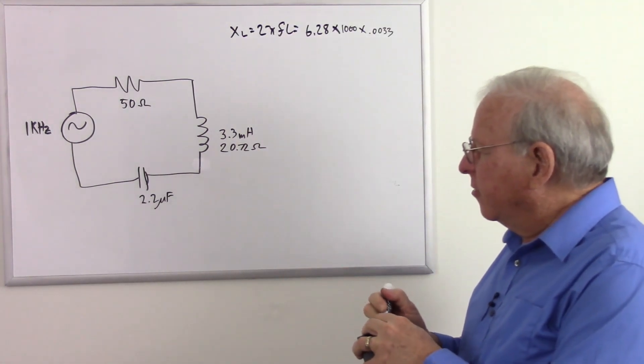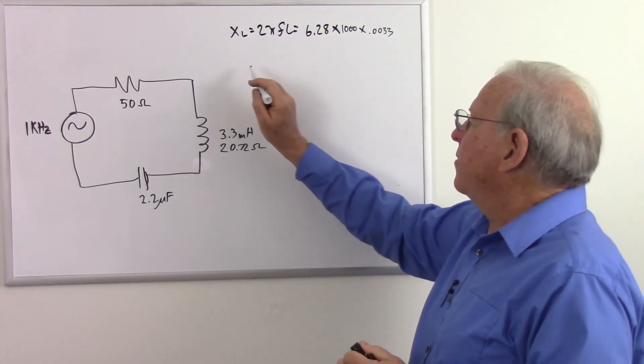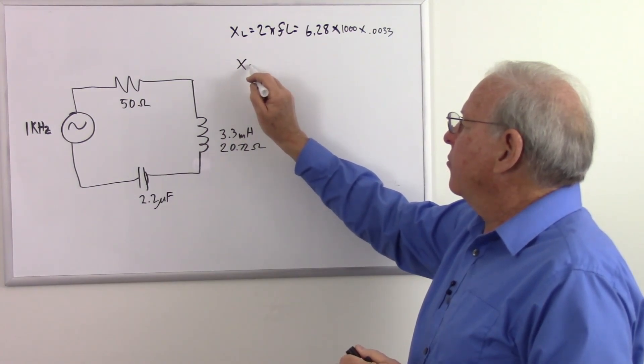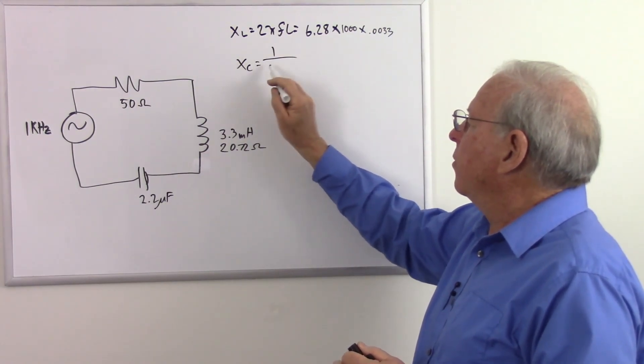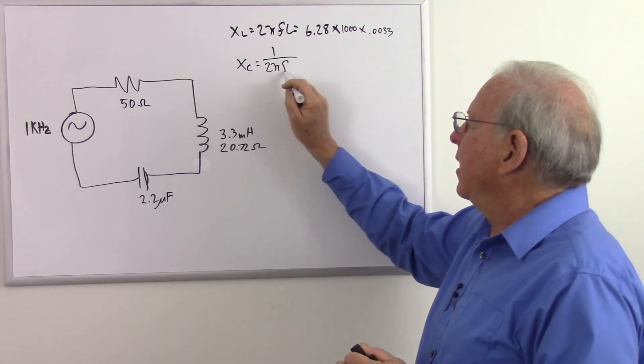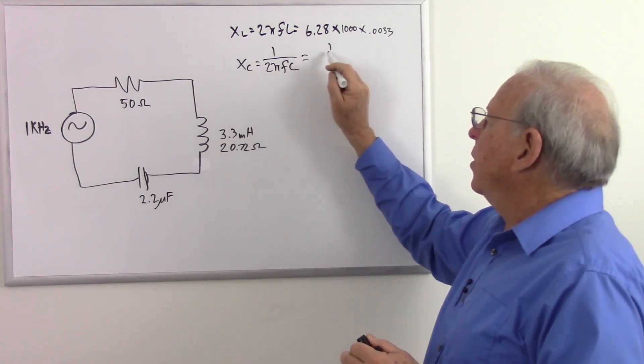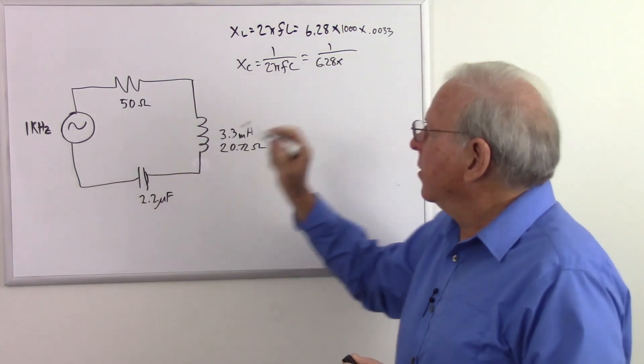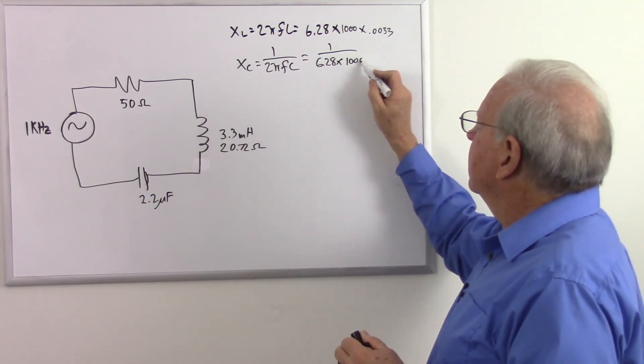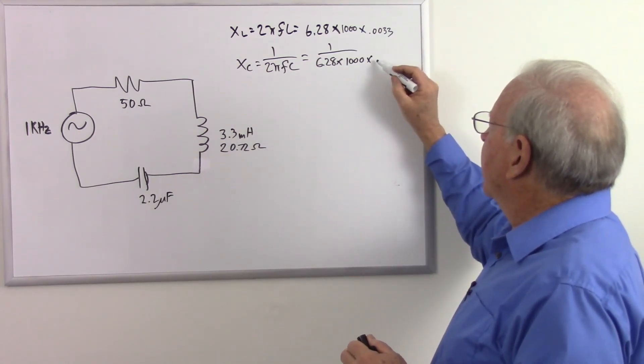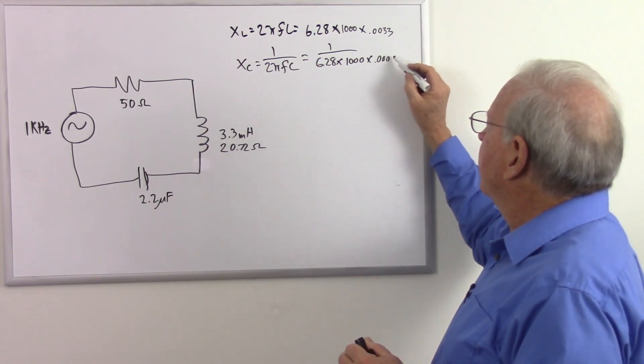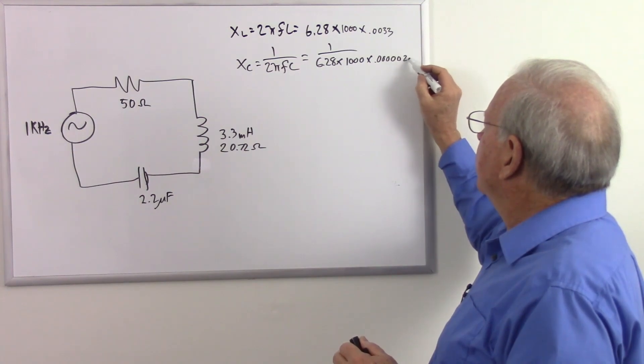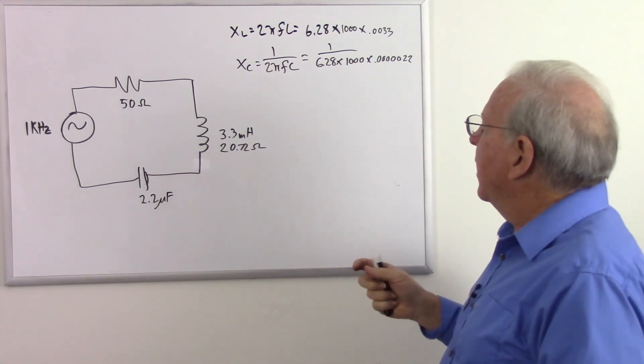Now let's calculate our capacitive reactance. That's X sub C equals 1 over 2 pi F C, which equals 1 over 6.28 times 1,000 times 2.2 microfarads, so that's 0.000022. Let's calculate that out.